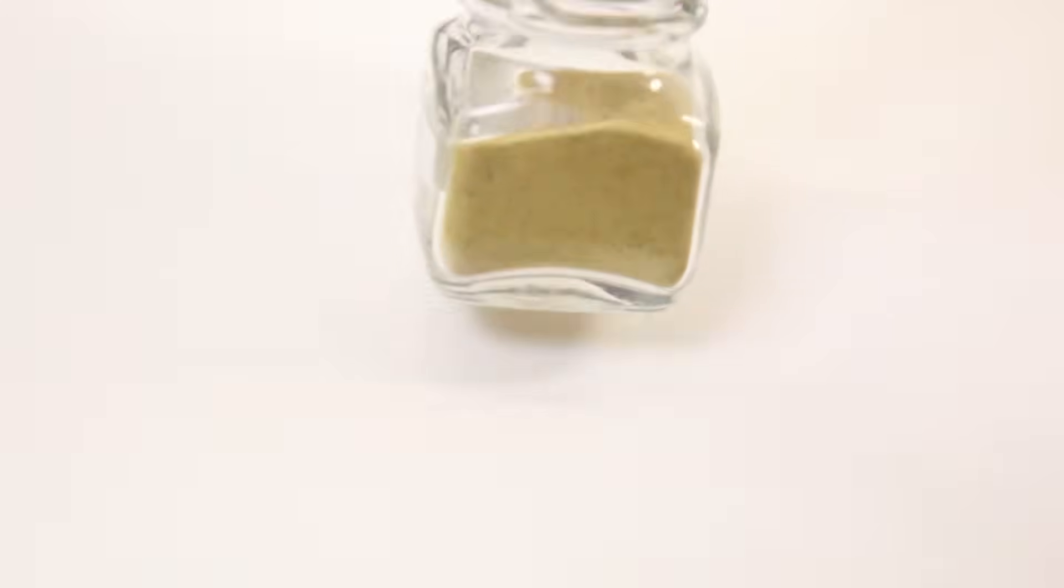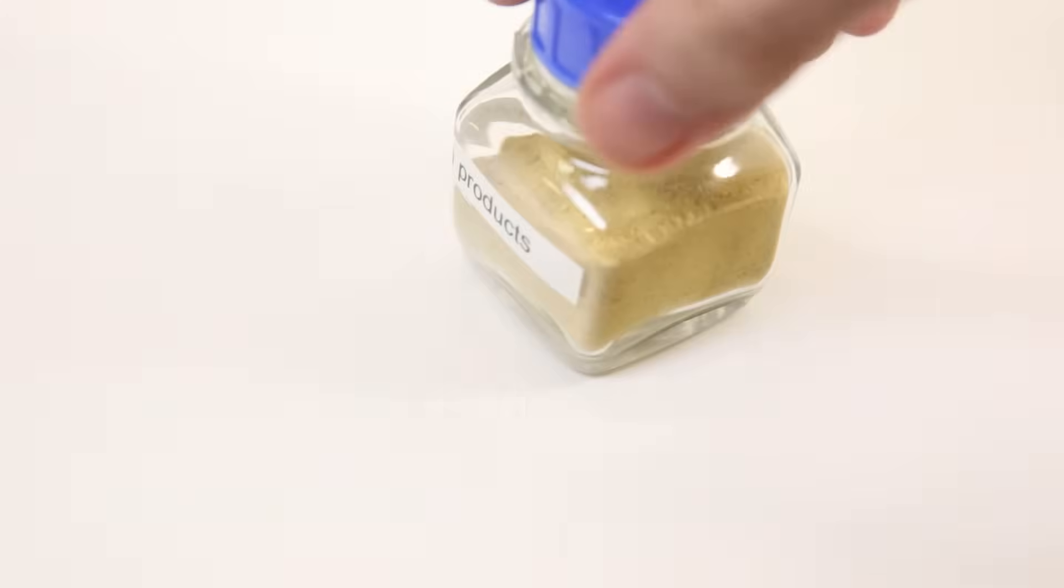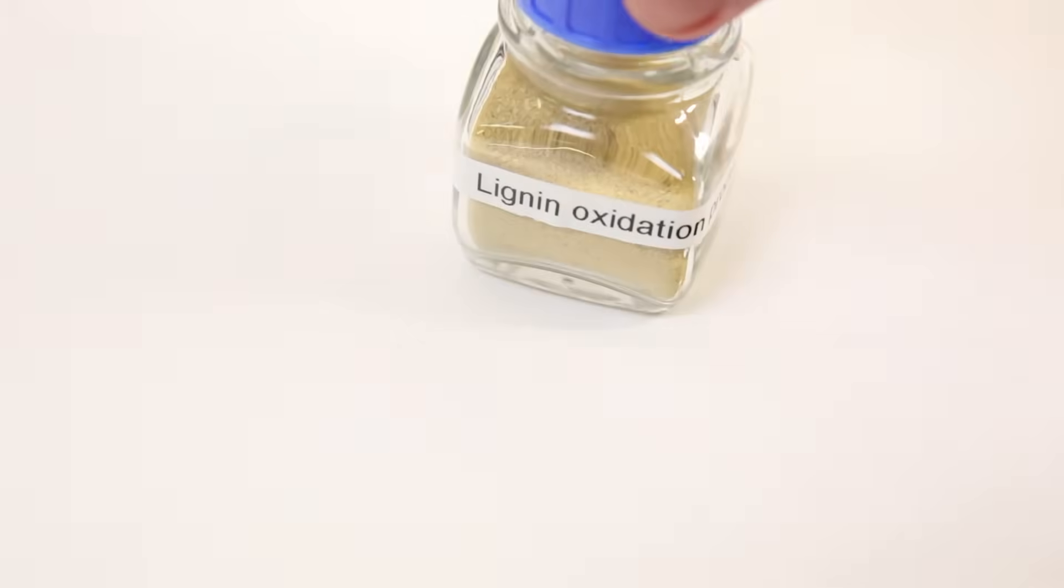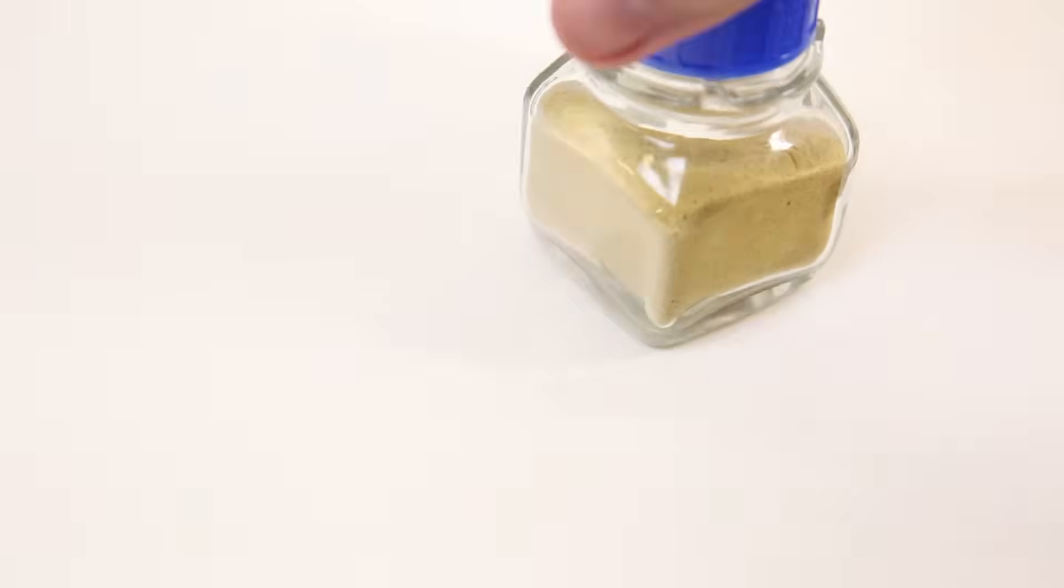So now I have a yellowish powder which contains a large bunch of different lignin oxidation products, but vanillin should only be a few percent of this powder.